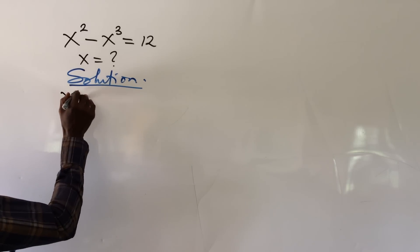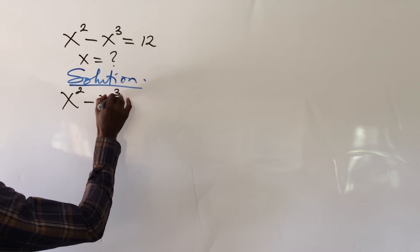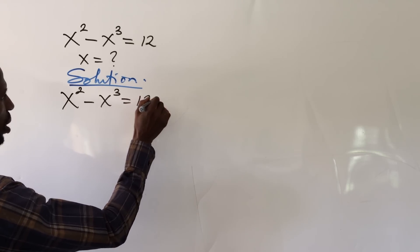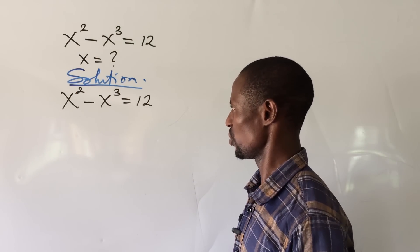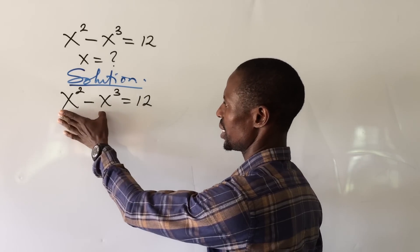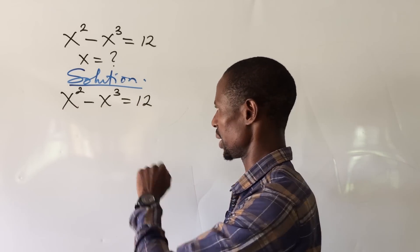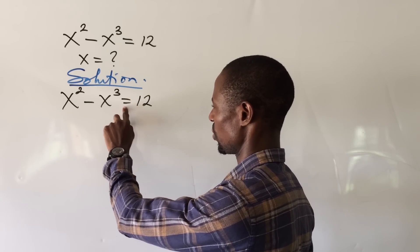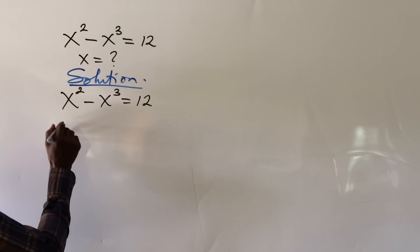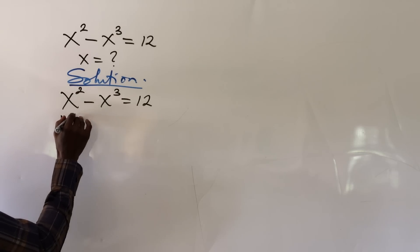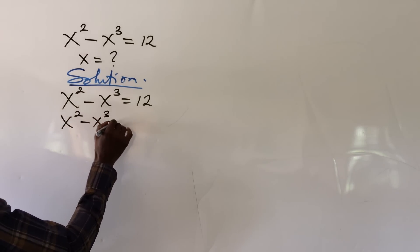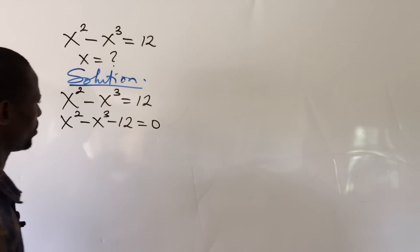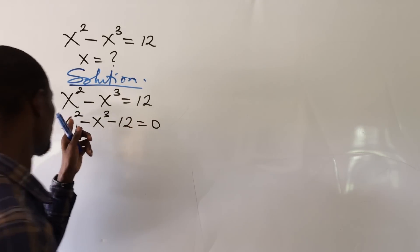Let's pull down our question. The question reads: x to the power of 2 minus x to the power of 3 equal to 12. Now, the number one thing we do is to move this 12 to this side of the equation. The sign of this term turns to a minus, so we have minus x squared minus x cubed minus 12 equal to zero.